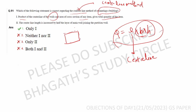The cross section is width into depth. The first option is correct. The second option states the center line length is increased by half the layer of the main wall joining the partition wall. Only options one and two are valid, so option three is the correct answer for this question.